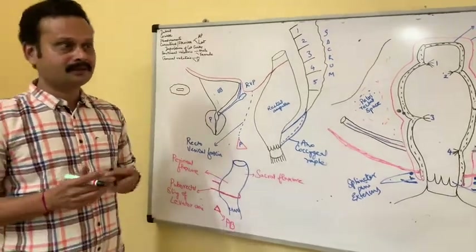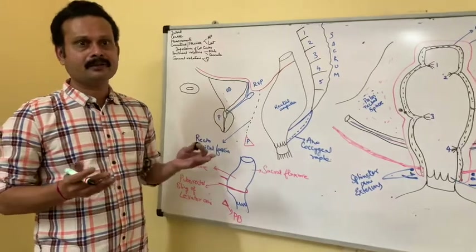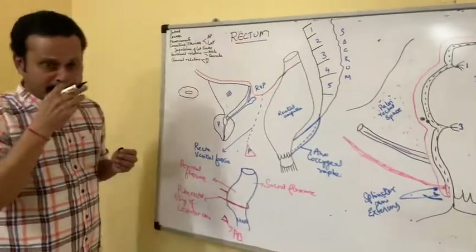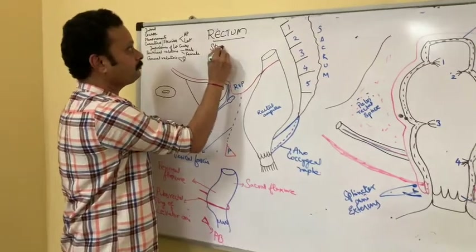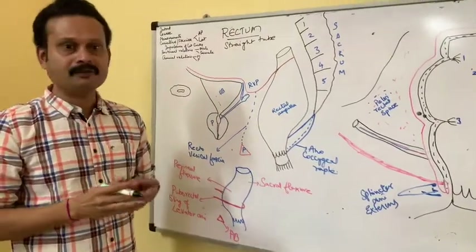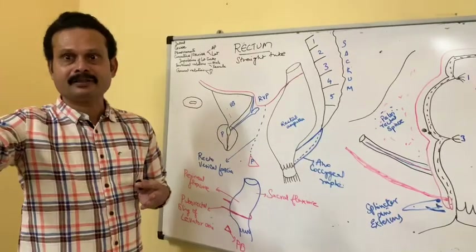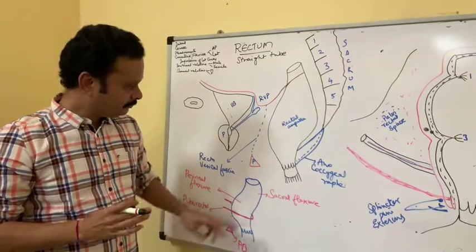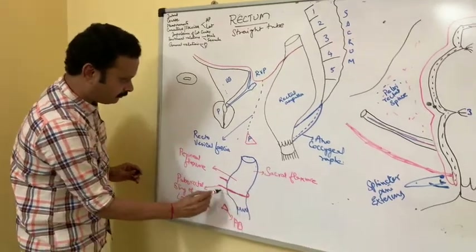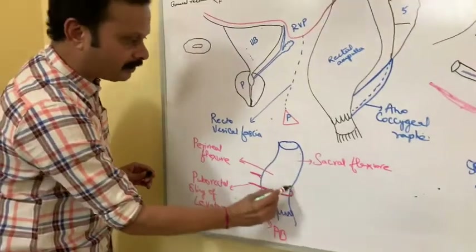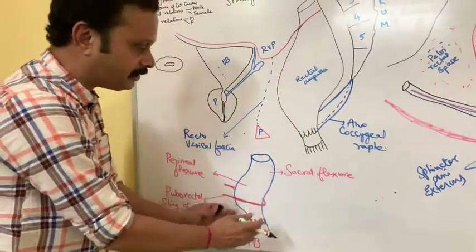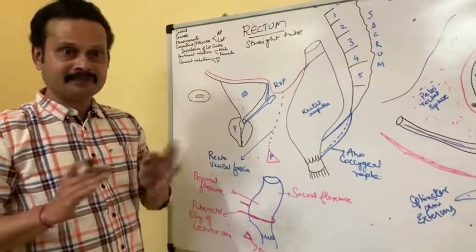Today we are going to discuss the topic called Rectum. The meaning of rectum means 'straight.' In lower animals, the quadrupeds, the rectum is straight, but in humans it is not strictly straight because of the pull of the puborectal sling of levator ani muscle, which pulls the lower part of the rectum forwards. Thus it is not straight, and hence the name rectum in humans is a misnomer or misnamed.